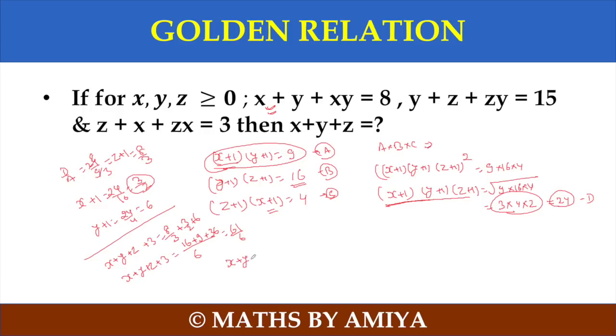Which one is equal to x plus y plus z plus 3. So my x plus y plus z ka value will be 61 by 6 minus 3 is nothing but 43 by 6. And this one is the answer of this question. So please.